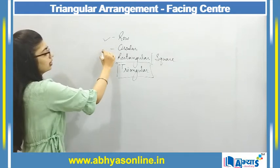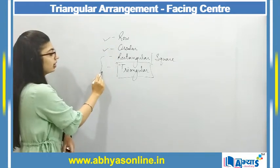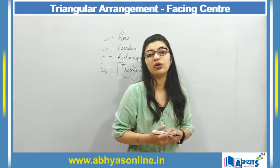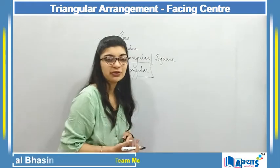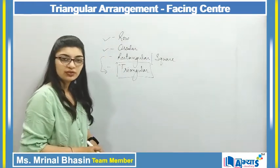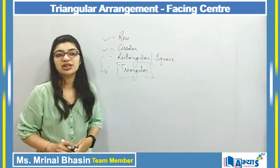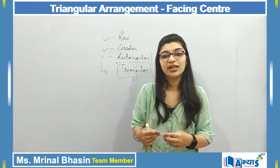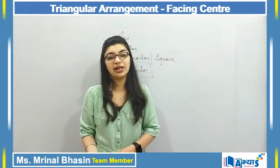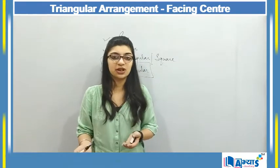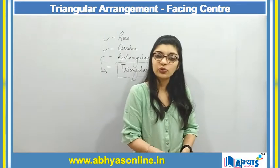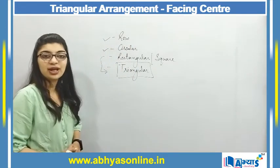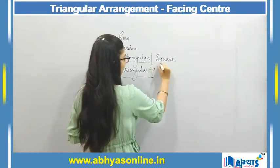Row and circular arrangement have different concepts, but rectangular and triangular arrangement are almost the same, where you will have some corners and some middle sides. In the rectangular arrangement, we discussed three sub-parts: first, where people were facing center; second, where people were facing outside; and third, where some persons faced center and some faced outward. We will similarly discuss the triangular arrangement today.